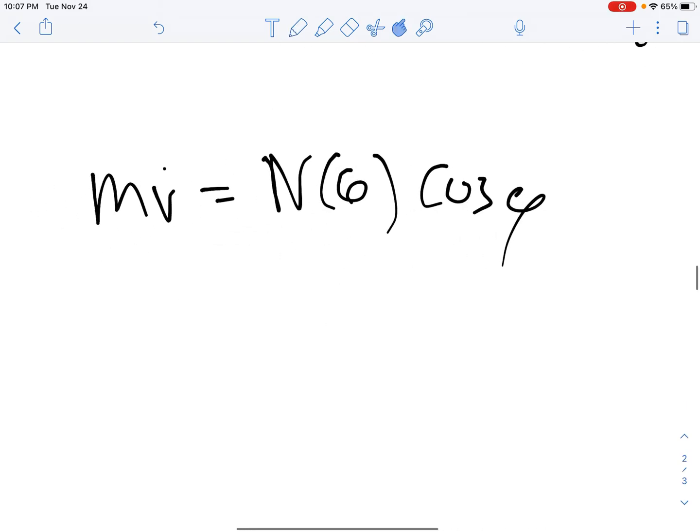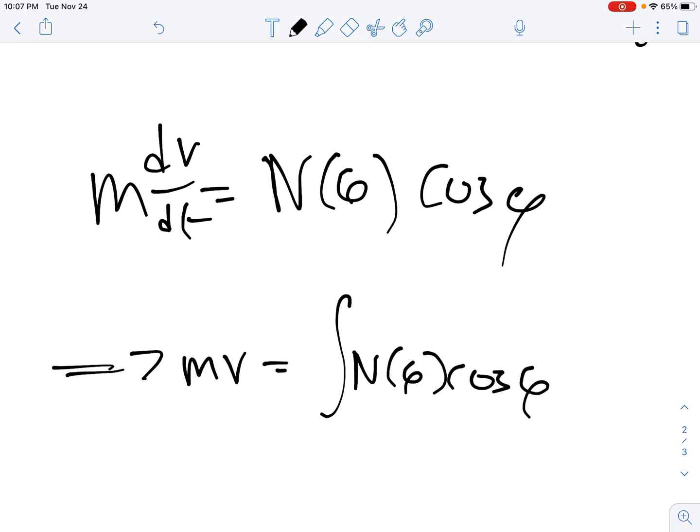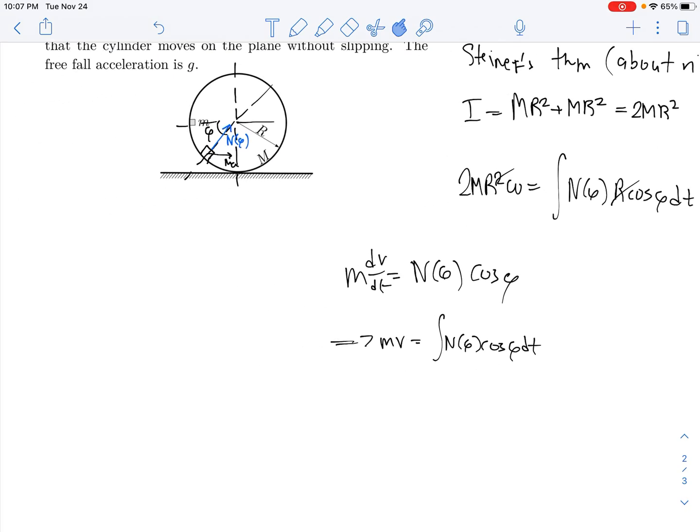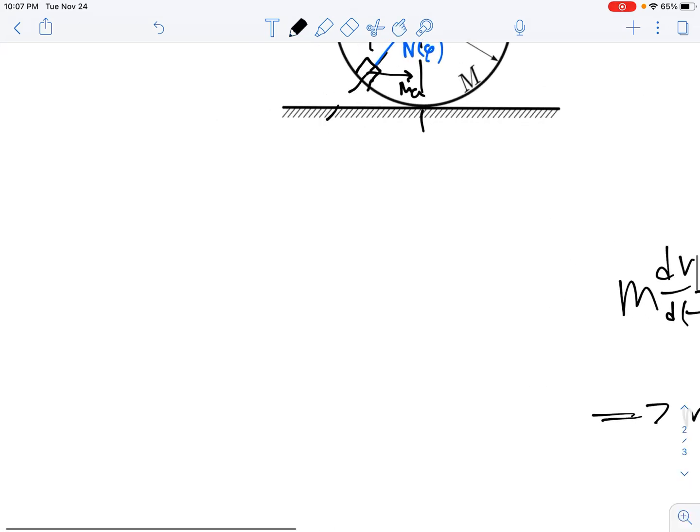We can take out R from here, and now this integral won't really help us unless we find another way to express it. On the bigger mass, this normal force is going to be effectively the force that accelerates it in the horizontal direction. So m times v dot equals N of phi cosine of phi. Note that v dot is also the same thing as dv/dt, so that implies that m times v, or the impulse, equals the integral of N of phi cosine of phi dt.